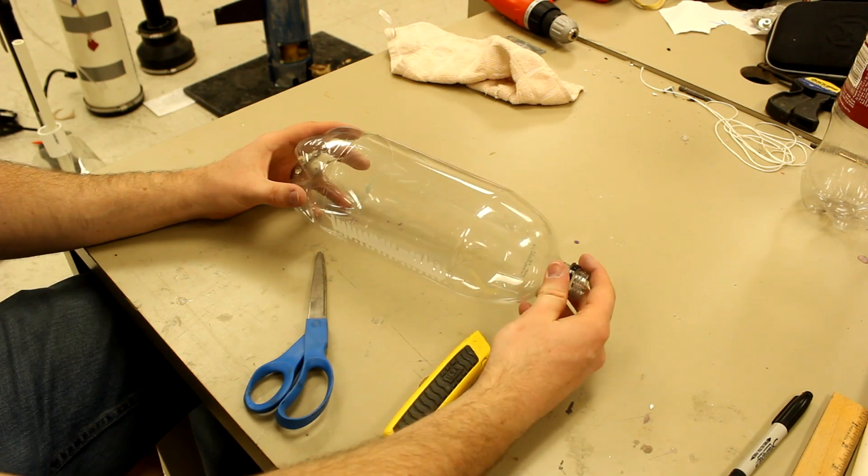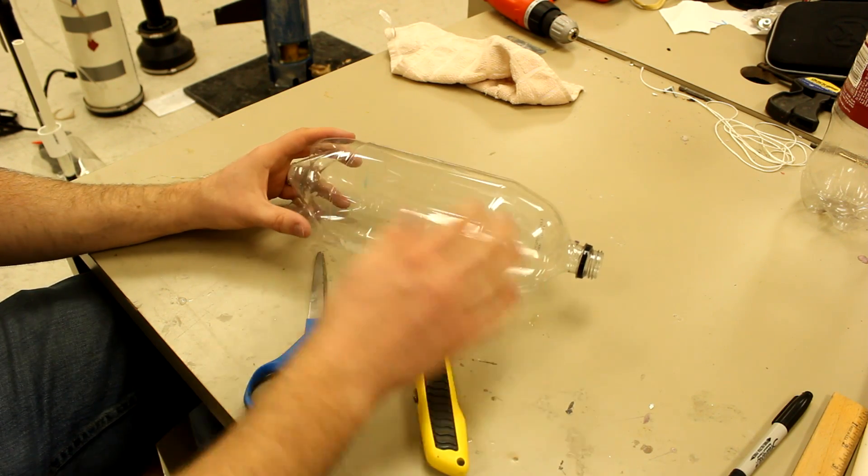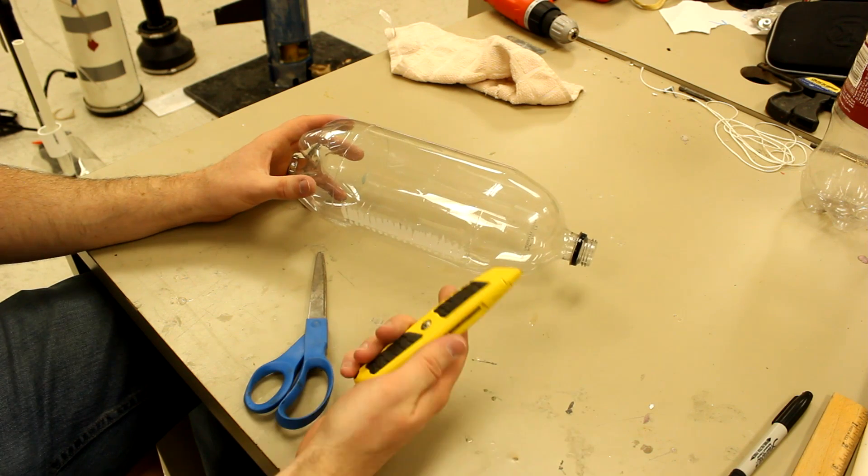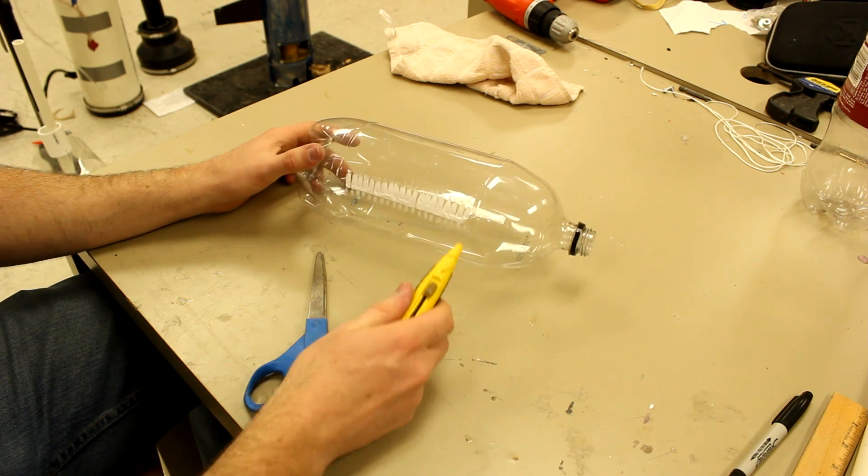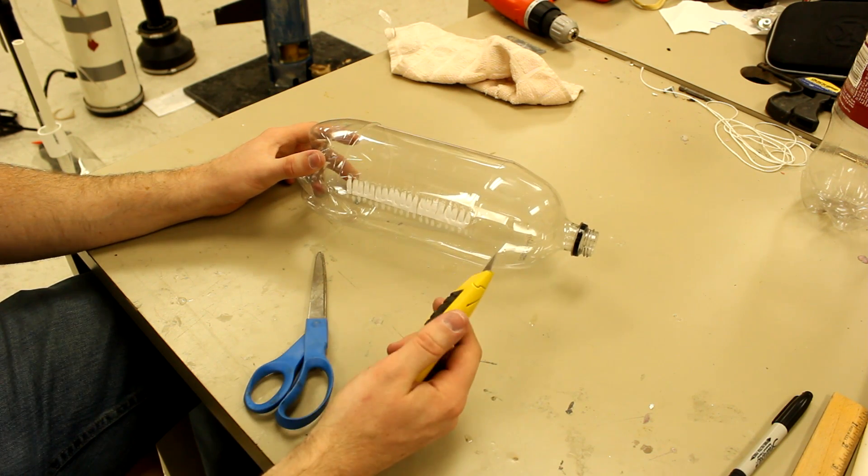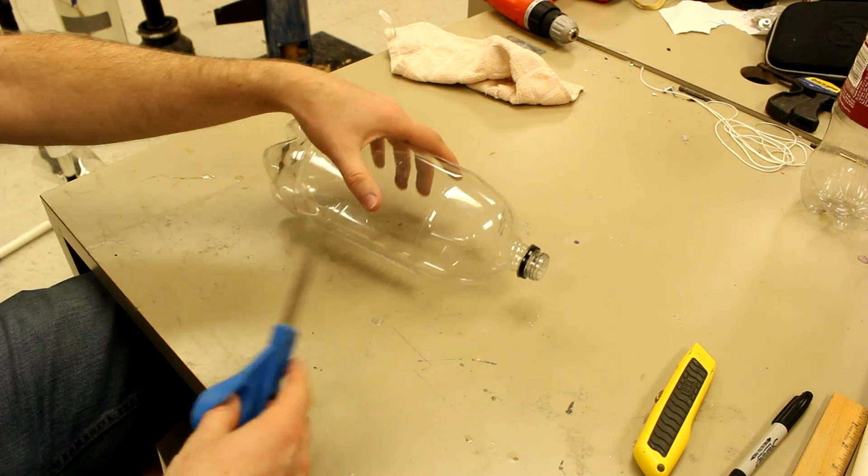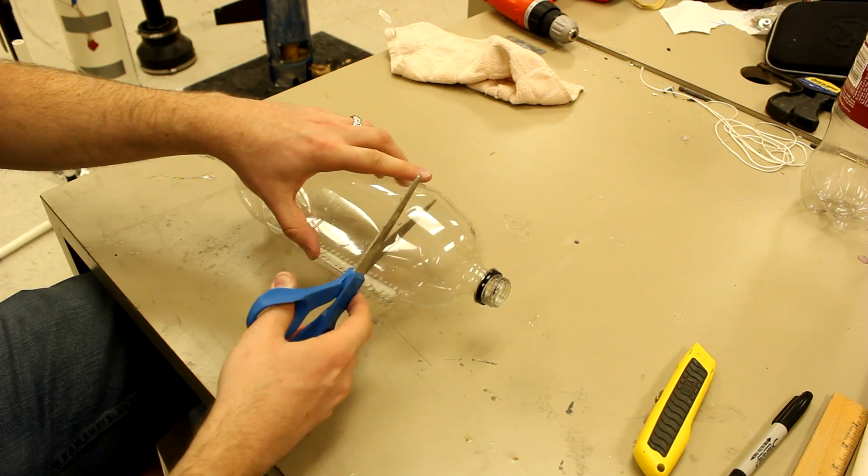Now you want to take your extra two liter bottle, and we're going to use this as a spring for our launch mechanism. What you want to do, is if you have a box cutter, it helps to get a slit started with that. Then once you've cut into the bottle, you go and cut it around.